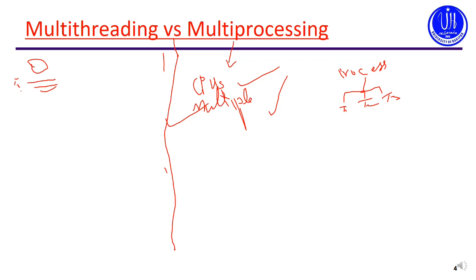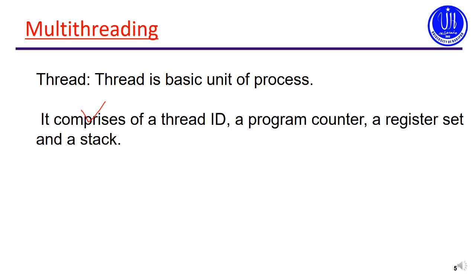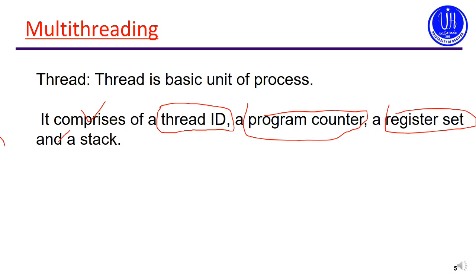A thread is the basic unit of a process. It comprises a thread ID, a program counter, a register set, and a stack.